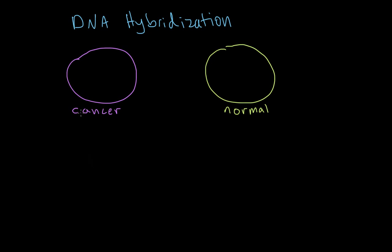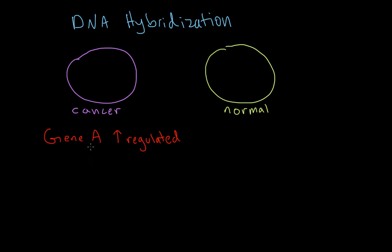Cancer cells are producing different proteins in different amounts. For a given gene — say gene A — there are two options: it can be upregulated or downregulated. If it's upregulated, we have a lot more of the mRNA and the protein that gene A encodes for. If gene A encodes for a protein that induces cellular proliferation and allows the cell to metastasize, then more expression means more of that protein.